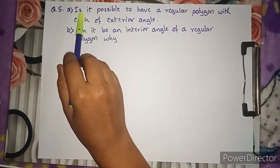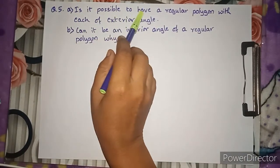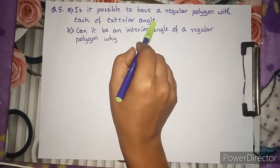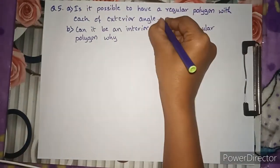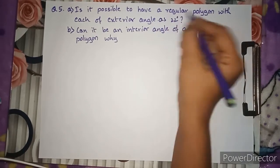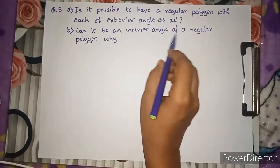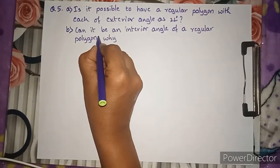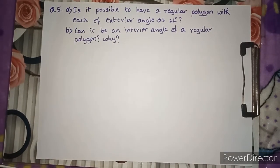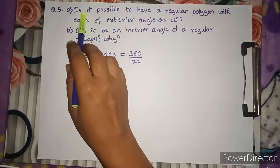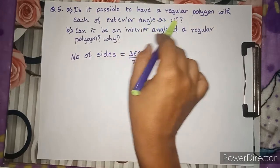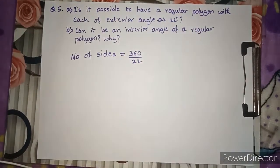Question number 5, part A: Is it possible to have a regular polygon with each exterior angle as 22 degrees? And part B: Can 22 degrees be an interior angle of a regular polygon, and why?